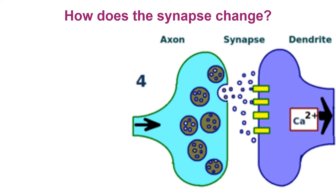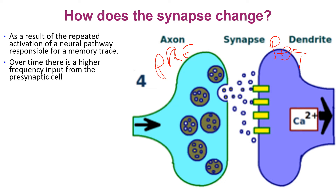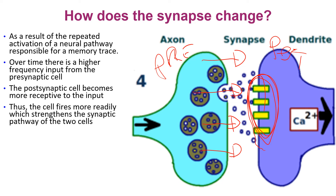Let's focus on what's going on in terms of LTP synaptically. As a result of repeatedly activating the neural pathway responsible for a memory trace — specifically, we're talking about the presynaptic neuron on the left here, and the postsynaptic cell on the right — over time we get a higher frequency, higher intensity input from the presynaptic cell. And therefore, over time, the postsynaptic cell becomes more receptive to that input, resulting in a strengthening of the relationship between these two cells.